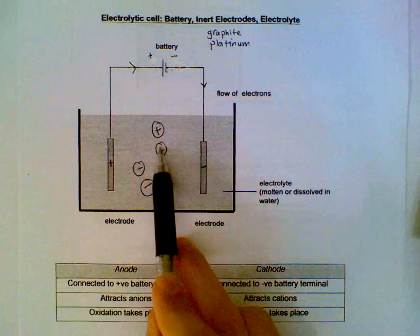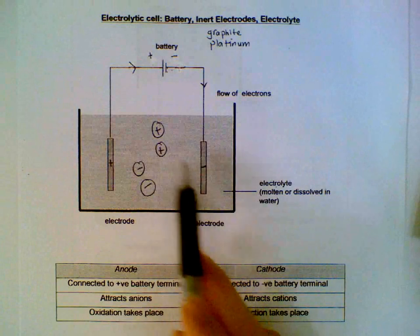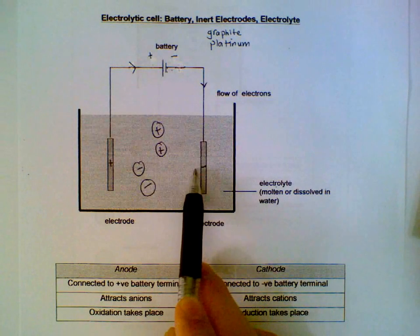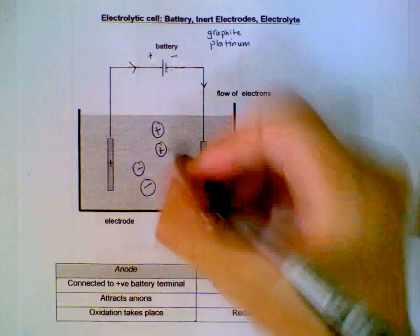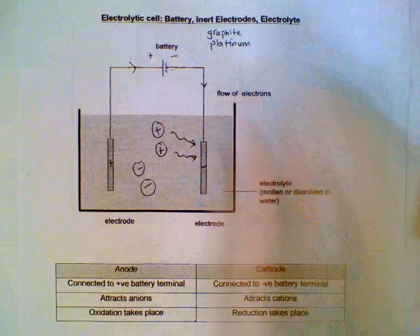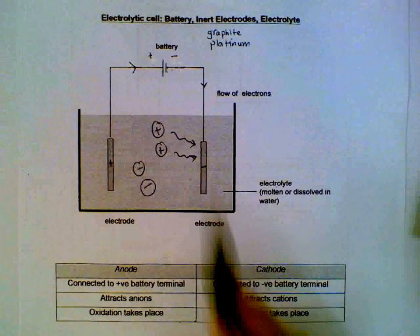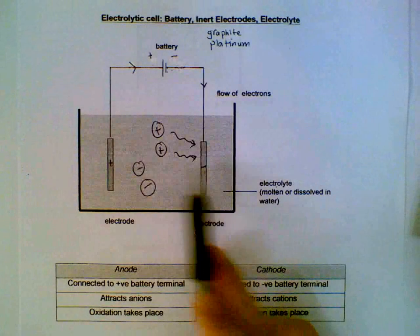The positive ions, the cations, will be attracted to the negative electrode due to the opposite charges. And when they reach the negative electrode, they will gain electrons.